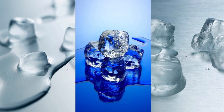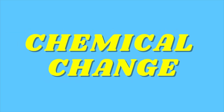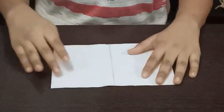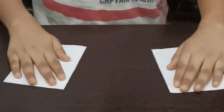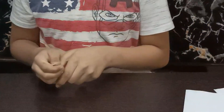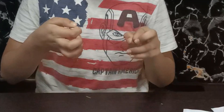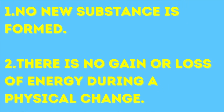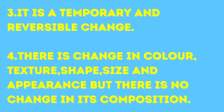For example, tearing of paper. Let us study the characteristics of physical changes with the help of simple experiments. I have a sheet of paper which is rectangular and white in color. Now let me tear it to see if its color and appearance changes. Nothing happened to its color and appearance — only its size and shape changed. Now let me break this wooden stick. No new substance is formed. Similarly, when I stretch a rubber band, no new substance is formed. Such a change in which no new substance is formed is known as a physical change. Characteristics of a physical change: no new substance is formed; there is no gain or loss of energy during this process; it is temporary and reversible; there is a change of shape, size, and appearance but no change in its composition.